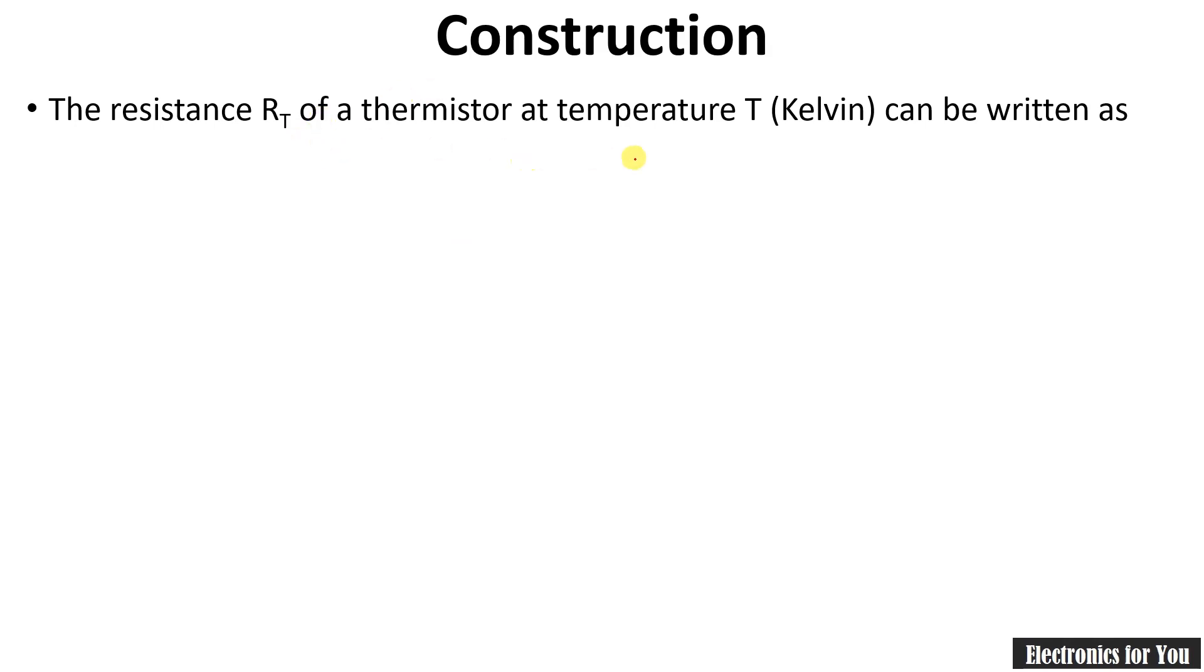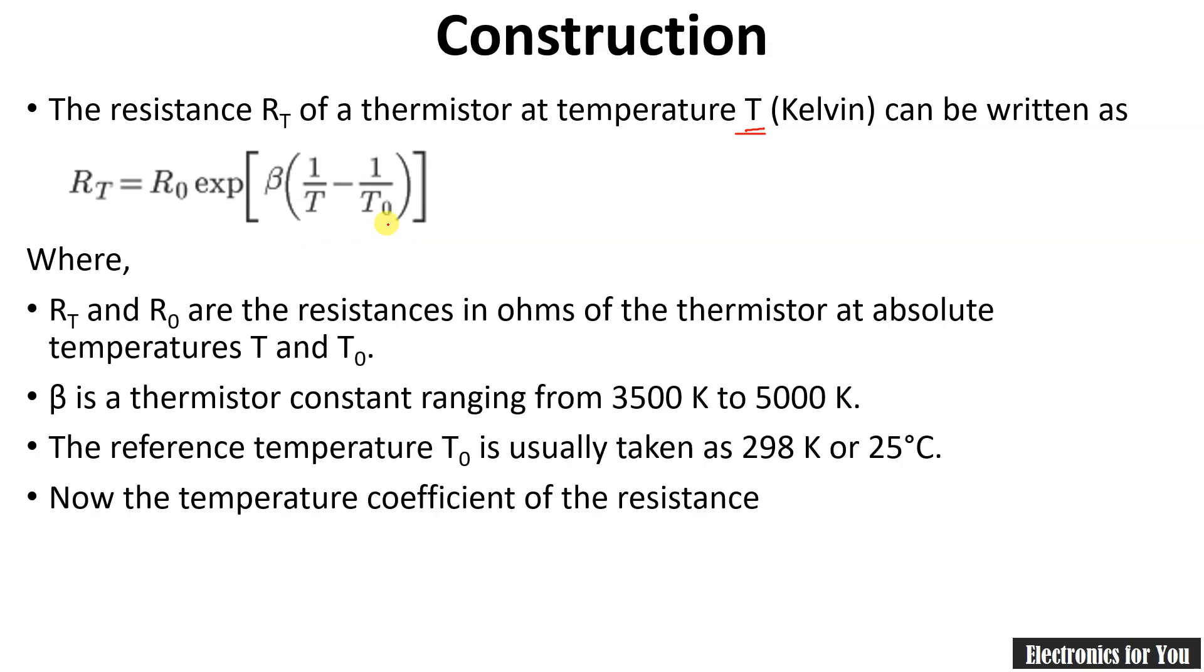The resistance RT of a thermistor at temperature T (Kelvin) can be given by the formula: RT = R0 exp[β(1/T - 1/T0)], where RT and R0 are the resistances in ohms of the thermistor at absolute temperatures T and T0. Beta (β) is the thermistor constant ranging from 3500 to 5000 Kelvin.